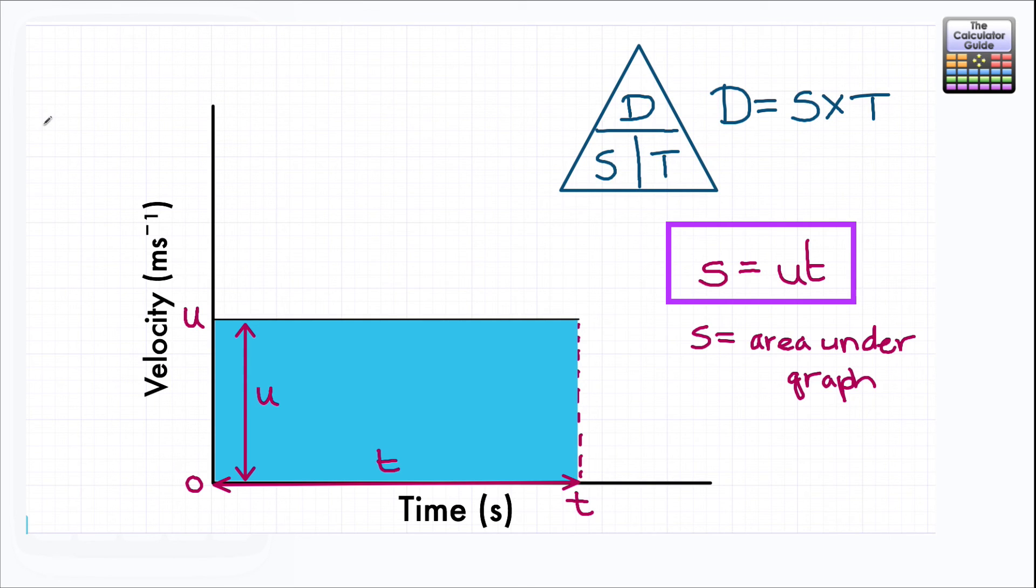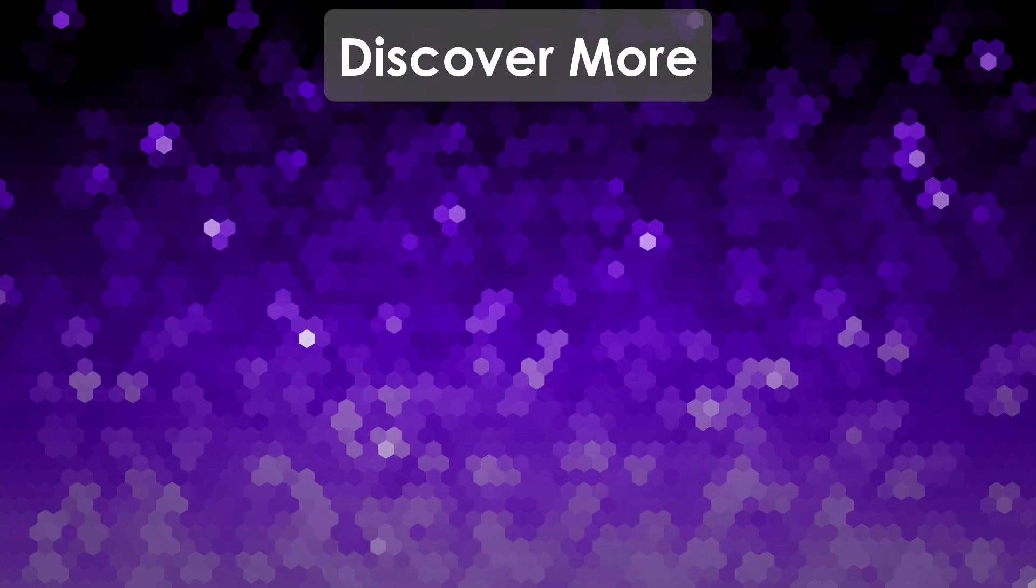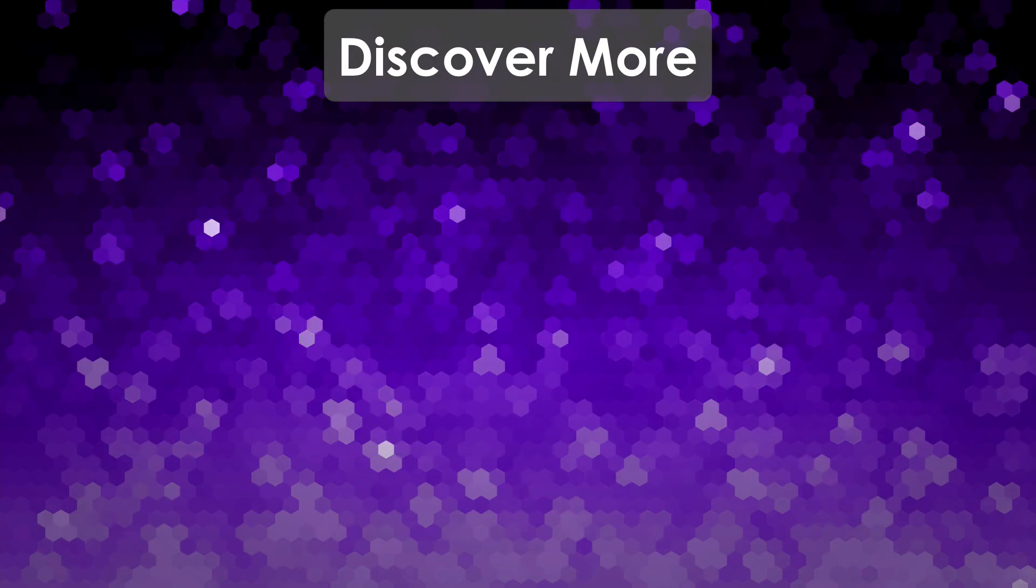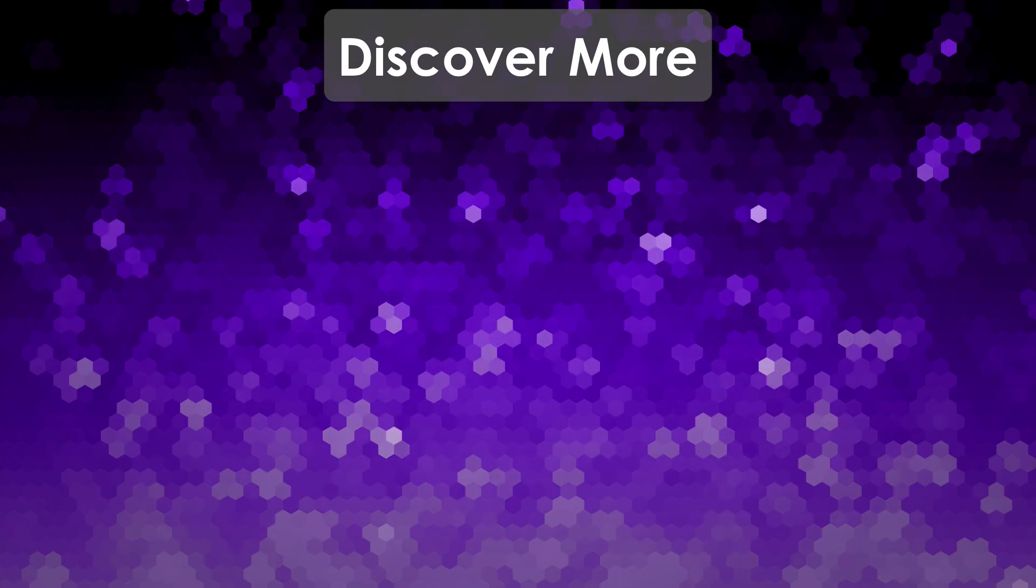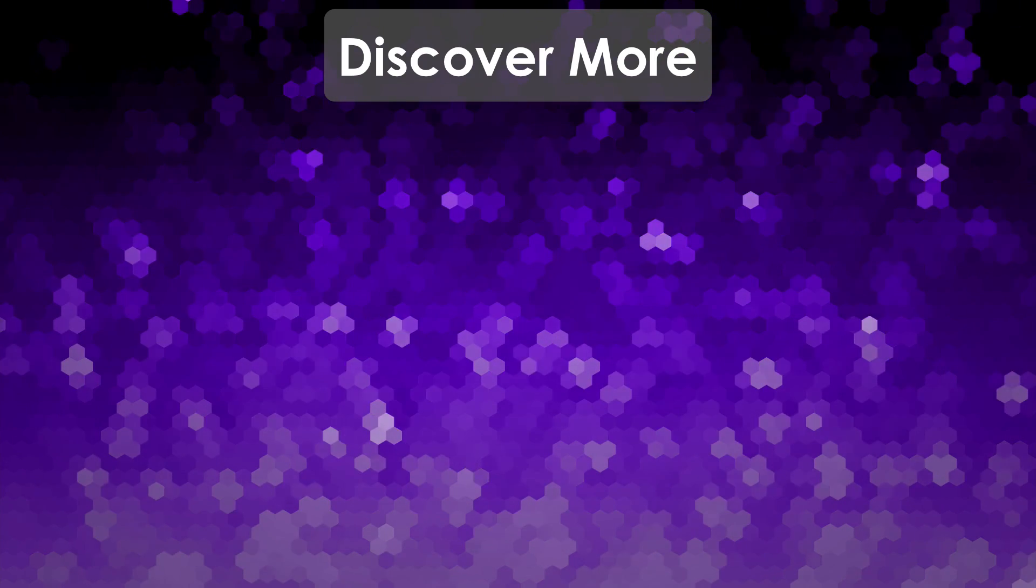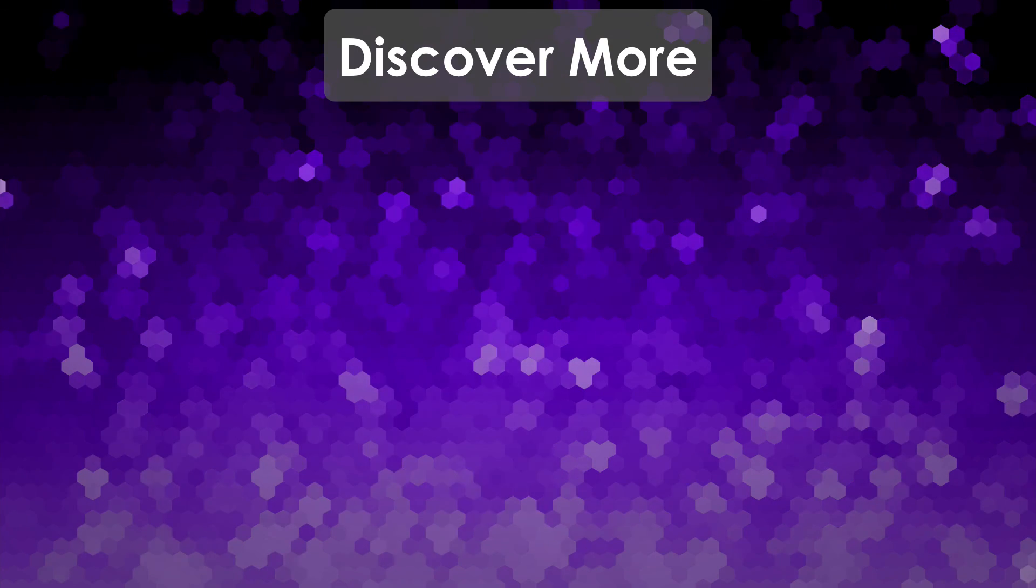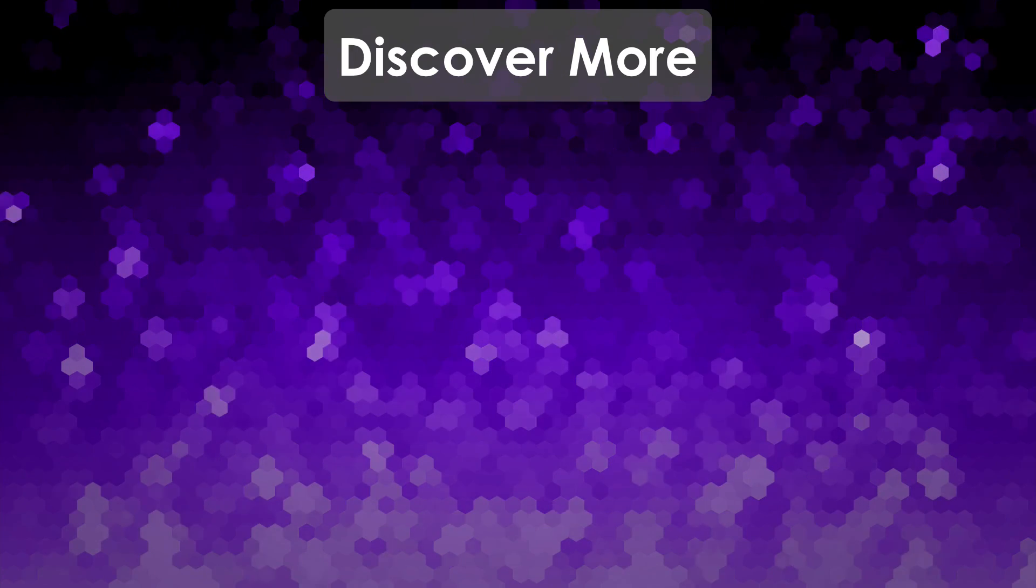So there we go. We've established our first kinematic equation of motion. S equals UT, where you have a constant velocity. So the velocity doesn't change, the speed doesn't change. Multiply by the time and that gives you the displacement. And we have also established that the displacement is equal to the area under the graph. This is going to be very important going forward over the next few videos. So I'll see you in the next video on the kinematic equations of motion. Thank you very much for watching.